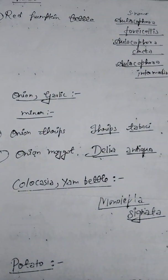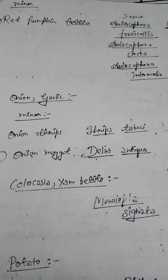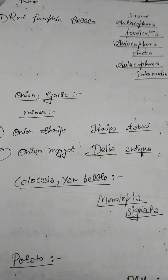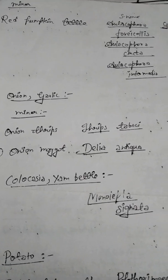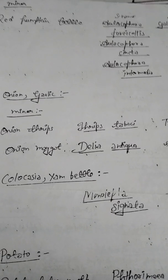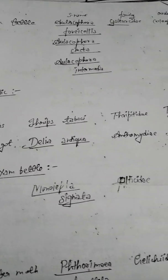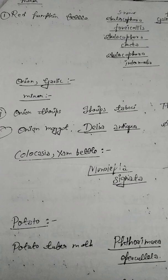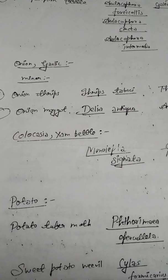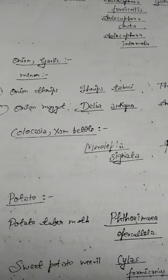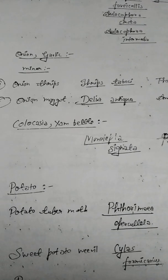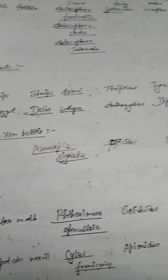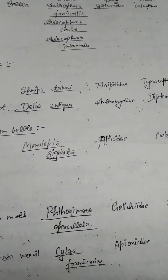Students, remember red pumpkin beetle also. Although it is a minor pest, sometimes they ask its scientific name. Red pumpkin beetle is Aulacophora foveicollis, family is Galerucidae, order is Coleoptera. Beetles are Coleoptera. In onion, remember onion thrips is Thrips tabaci, family Thripidae, order Thysanoptera. Onion maggot is Delia antiqua, family Anthomyiidae, order Diptera.